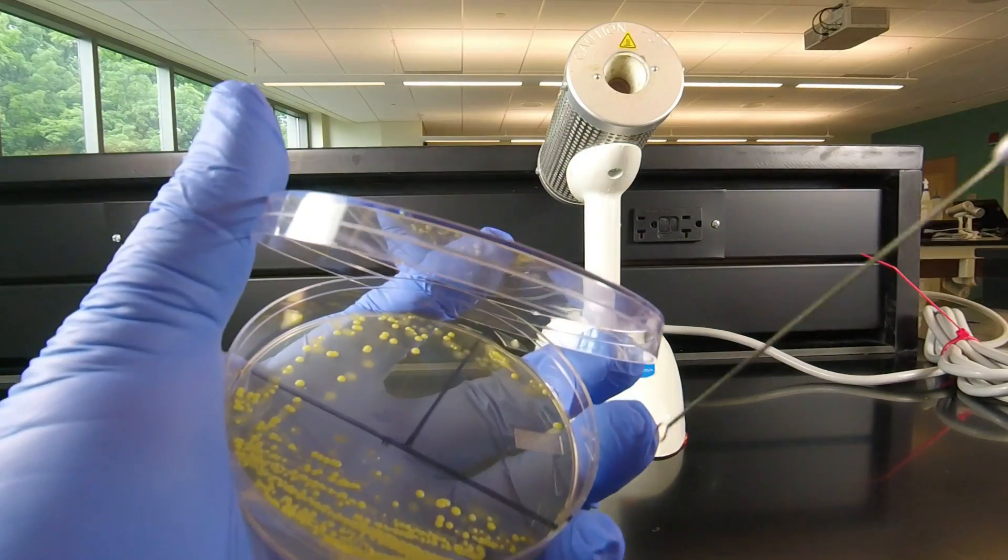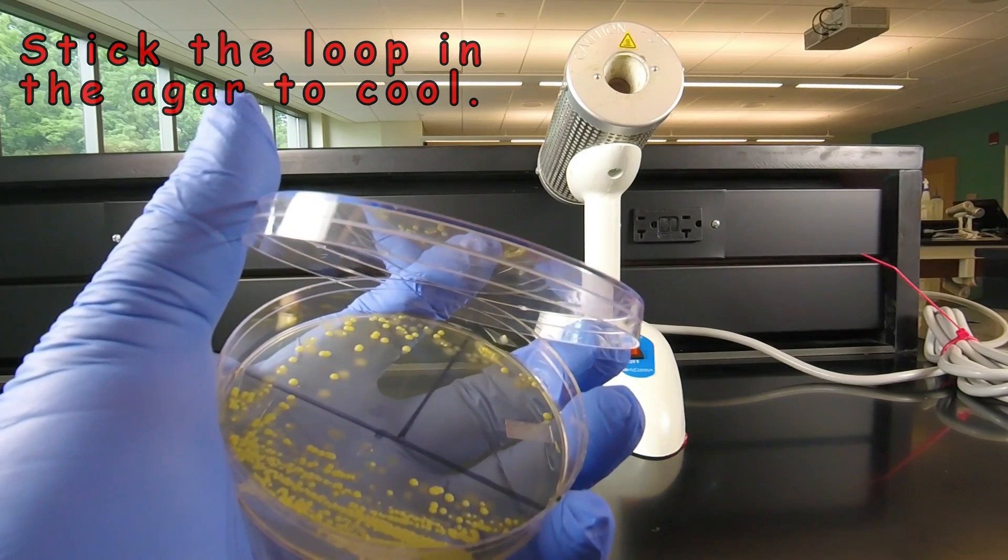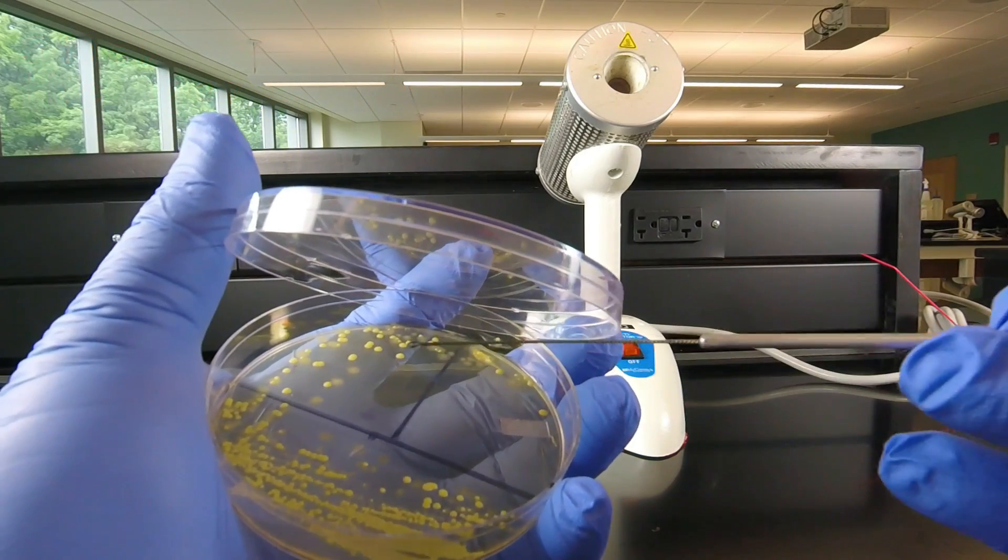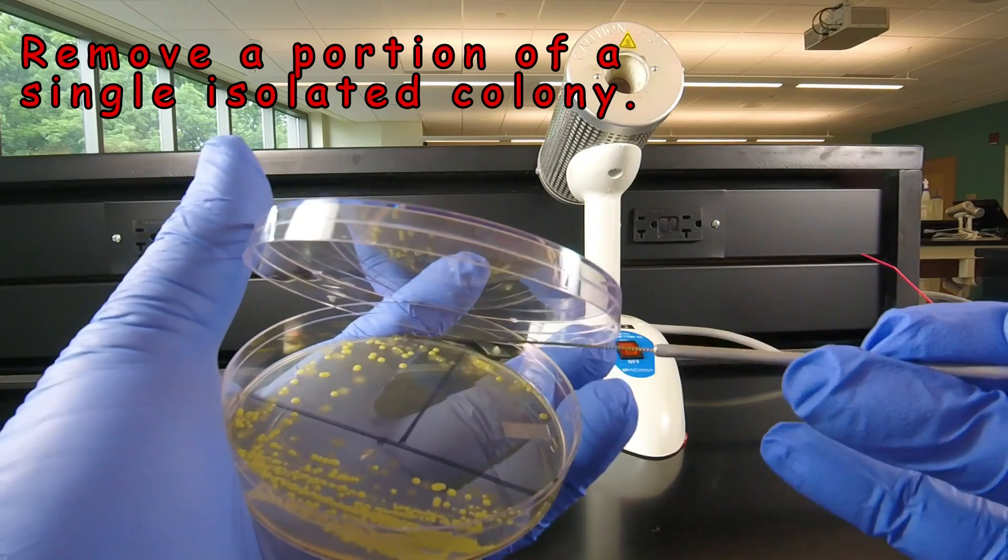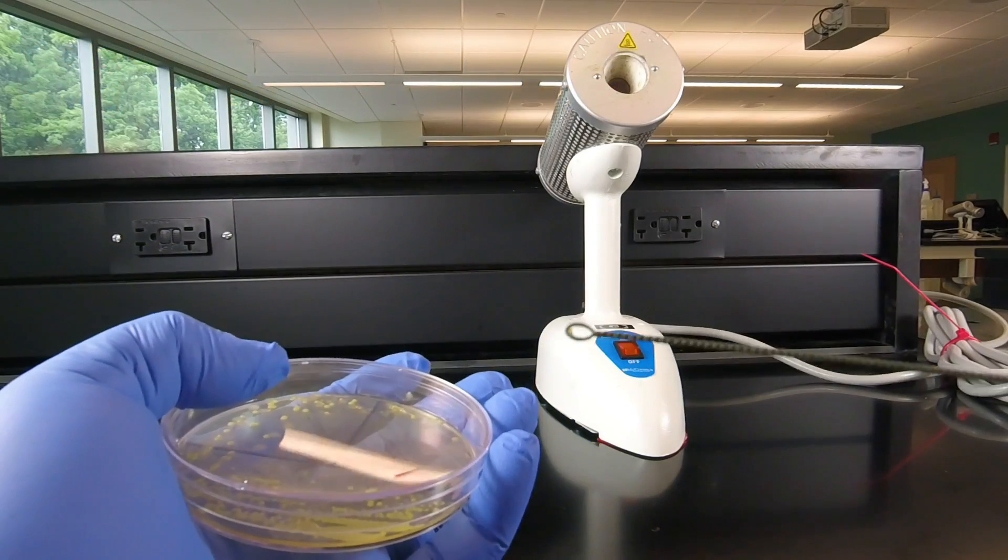Now I'm going to stick the loop in the agar to cool since it just came out of the Bacti-cinerator. And I'm going to remove a little bit of a single colony of Micrococcus luteus, which we now have on the loop.